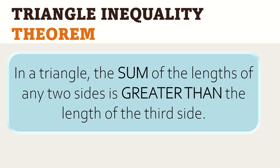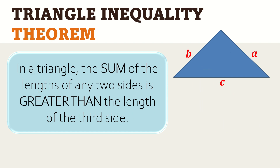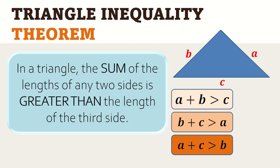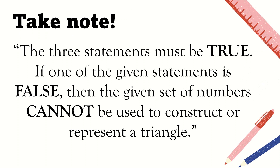If we are given side measurements to determine whether we can construct a triangle, we have to apply the triangle inequality theorem by adding 2 sides and comparing to the 3rd side. It must satisfy these 3 conditions. Given a triangle with sides A, B, and C: A plus B must be greater than C; B plus C must be greater than A; and A plus C must be greater than B. All three statements must be true. If one of the given statements is false, then the given set of numbers cannot be used to construct or represent a triangle.